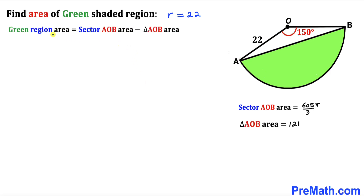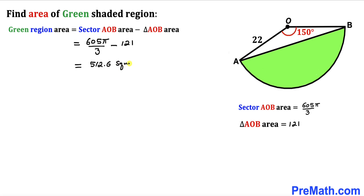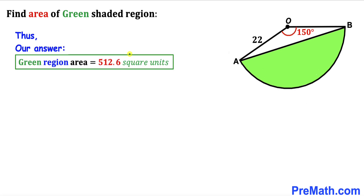Now for the final step, let's calculate the area of the green shaded region. The sector AOB area is 605π divided by 3, and the triangle AOB area is 121. Therefore, the green shaded area equals 605π divided by 3 minus 121, which simplifies to approximately 512.6 square units. So the area of the green shaded region is 512.6 square units. Thanks for watching, and please don't forget to subscribe to my channel for more exciting videos!